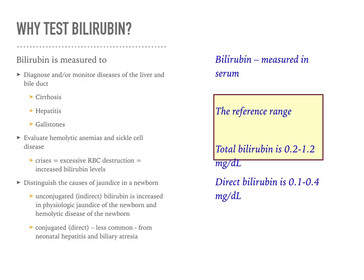Why test bilirubin? It gives diagnostic information for liver cirrhosis, hepatitis, and gallstones. In neonates, we're testing to make sure it's cleared to prevent kernicterus. We use it to evaluate hemolytic anemias and sickle cell disease — patients in sickle cell crisis can have excessive RBC destruction and increased bilirubin levels. Regarding jaundice in the newborn, unconjugated bilirubin is increased in physiologic jaundice and hemolytic disease of the newborn. Conjugated jaundice is less common and arises from neonatal hepatitis and biliary atresia.